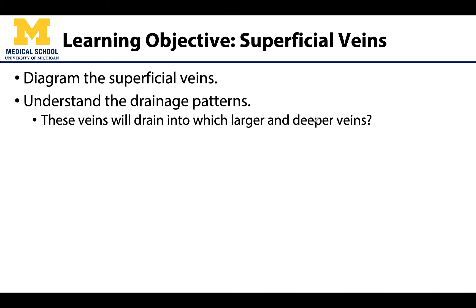The objectives for this video are to be able to diagram the superficial veins of the neck and really understand where they drain their deoxygenated, or mostly deoxygenated, blood. Recall that blood has to make its way back to the heart, so how does it get there? Most of these superficial veins are heading towards a major vein of the root of the neck, and we will discuss which one that is in a bit more detail.